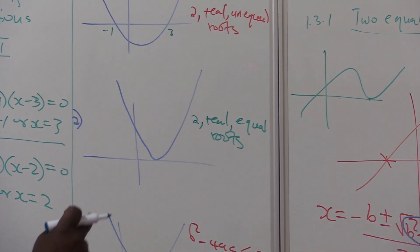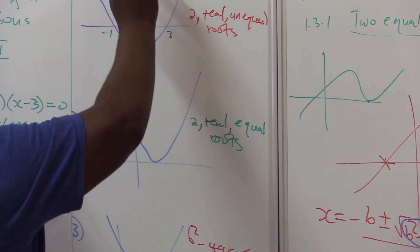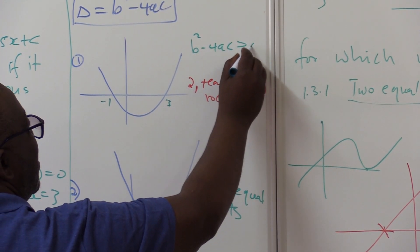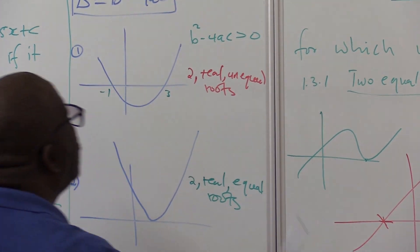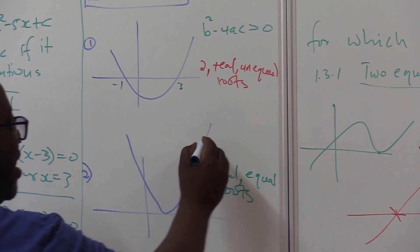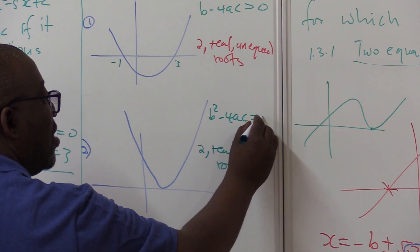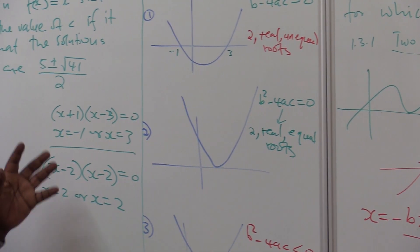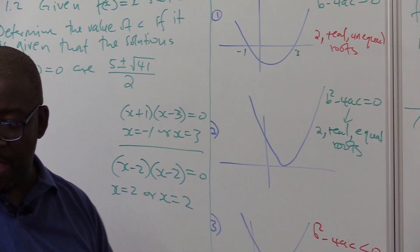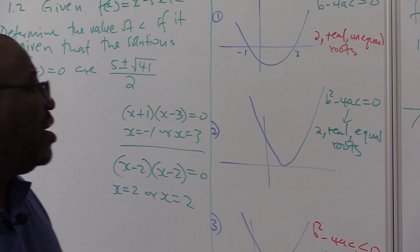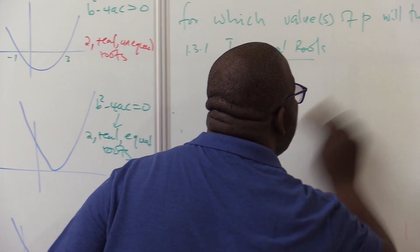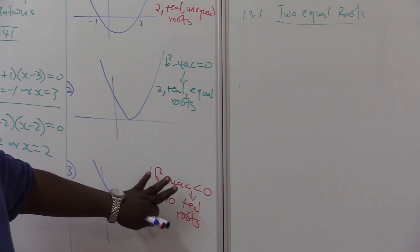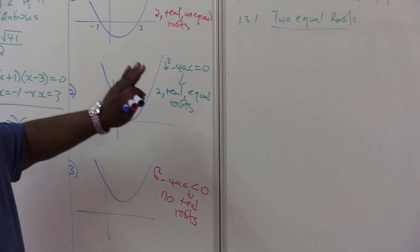Now, what do we know? When we've got 2 real and unequal roots, your discriminant — b squared minus 4ac — will be greater than 0. If this value is greater than 0, you are going to get 2 real and unequal roots. But if b squared minus 4ac is equal to 0, you're going to get 2 real and equal roots. That is the key.